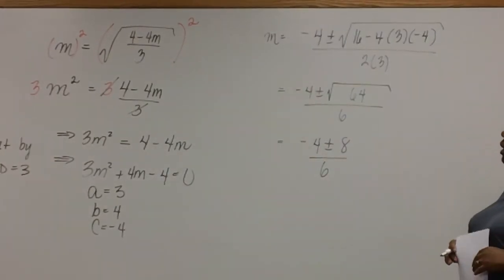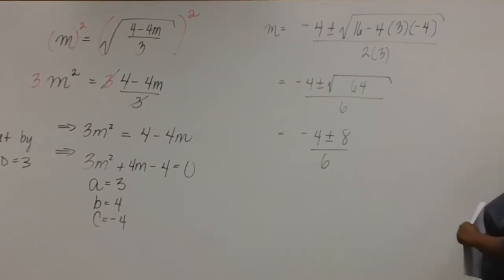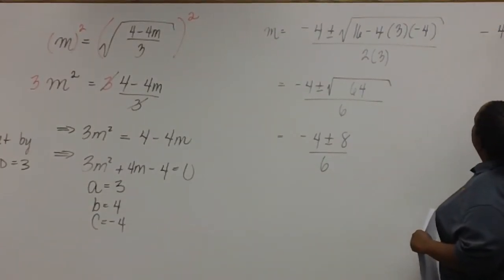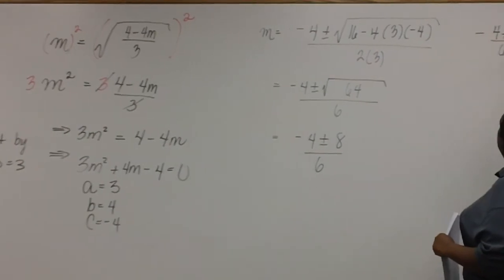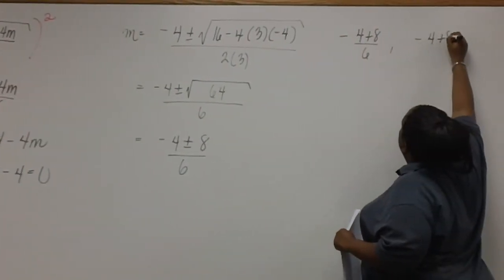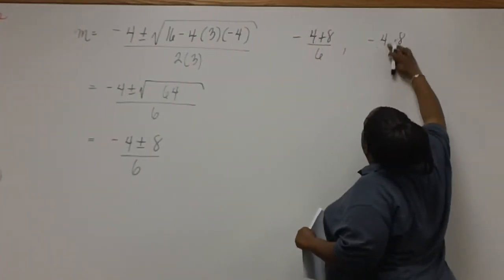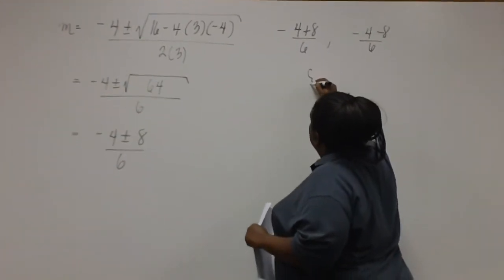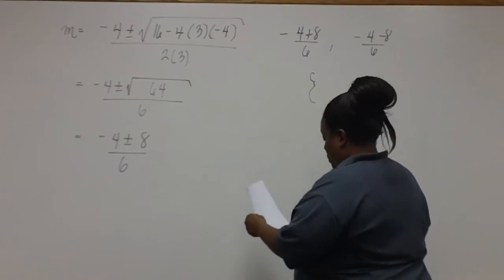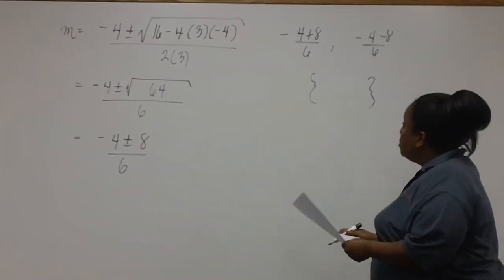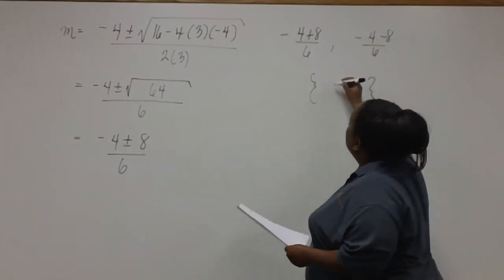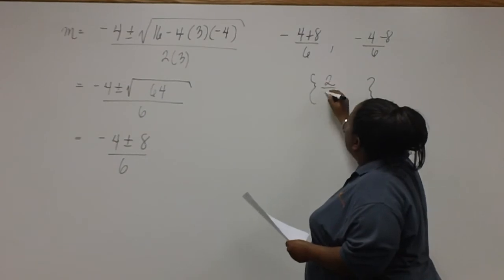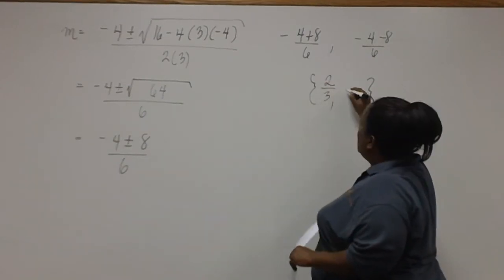And from here, we can write off two expressions. One with the plus sign and one with the minus sign. And after simplifying both, you should get 2 thirds and negative 2.